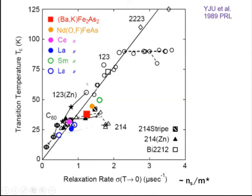Let me start with the superfluid density. I'm showing a graph of transition temperature TC versus the minimum spin relaxation rate on the horizontal axis, which at T=0 represents the superconducting carrier density NS divided by the effective mass M*, which we usually call superfluid density. In the under-doped cuprates, we see a very interesting linear relationship starting from 1989.